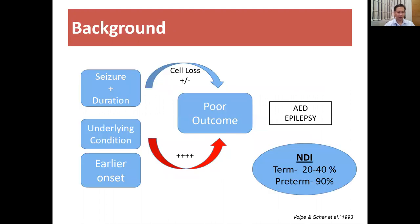Why is seizure important? It was found that it is not only the underlying condition which can lead to poor outcome, but it is the severity of seizure and duration of the seizure which can ultimately lead to cell loss in the brain and poor outcome. Earlier onset of seizure means greater chances of poor outcome. If you look at the neurodevelopmental impairment, in term infants a neonatal seizure can lead to 20 to 40 percent poor neurodevelopmental impairment, as compared to preterm infants where it can be up to 90 percent.